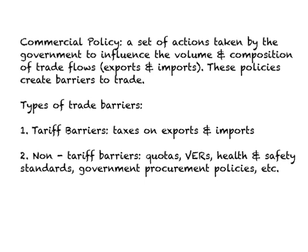Another example of a non-tariff barrier is VERs, which stand for Voluntary Export Restraint. This is similar to an import quota, but the quota is fixed by the exporting nation itself — the exporting nation says we are going to export only this many cars into the U.S. Other non-tariff barriers include health and safety standards or government procurement policies, such as 'buy U.S. products only.' All of these have an impact on the volume and composition of foreign trade.